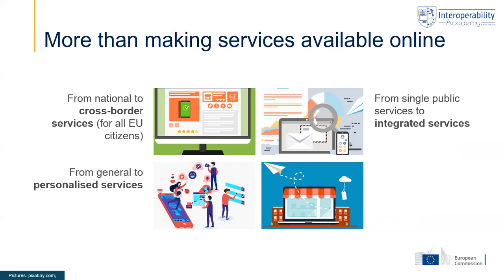This also brings additional challenges to the public authorities involved in providing these services, because it means they have to work together, integrate their services, working procedures, and processes. And then finally, another level of ambition is realizing proactive services — in the sense that it is no longer required for citizens and businesses to request or apply for services. If they need it and can receive it, they automatically receive it. This fourth evolution from reactive to proactive services shows the additional levels of ambition we have with regard to online service delivery.